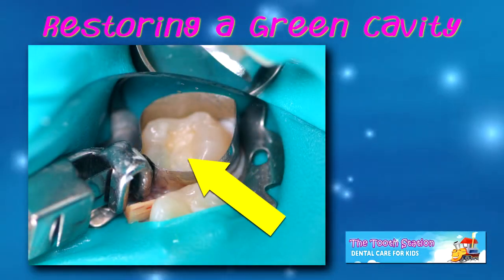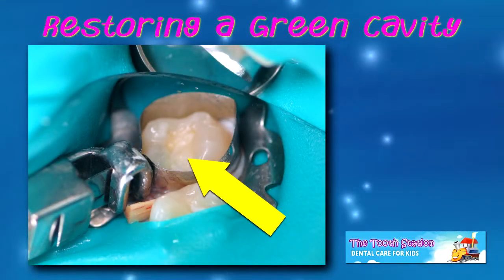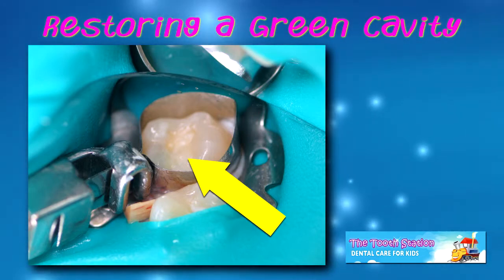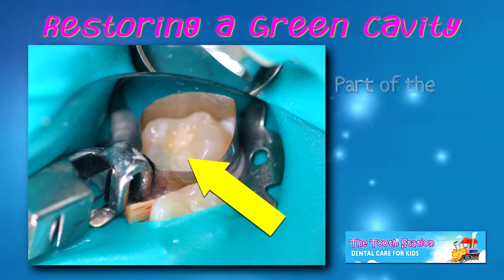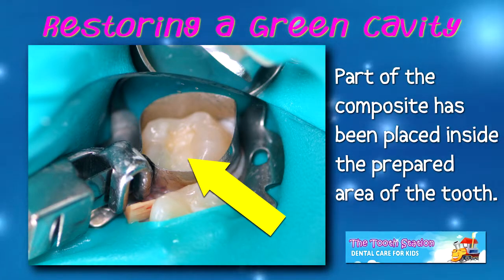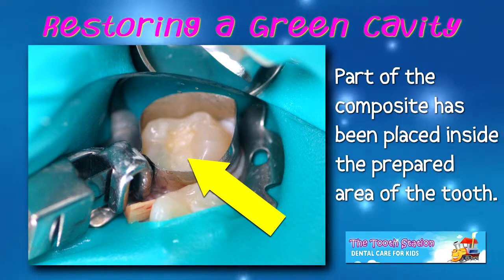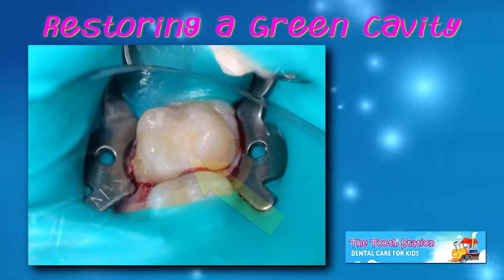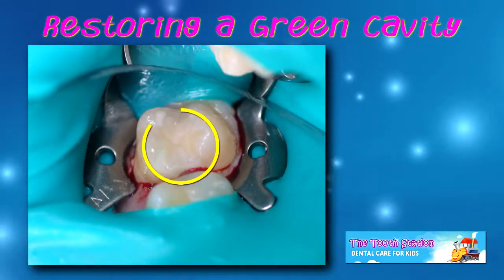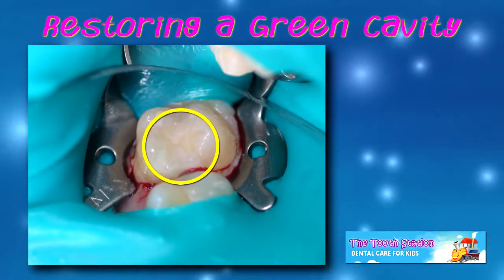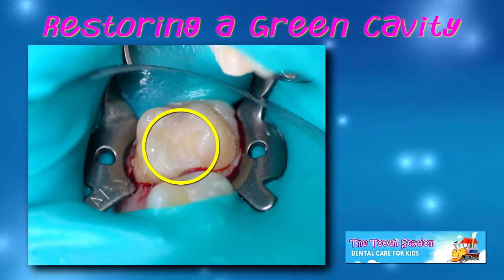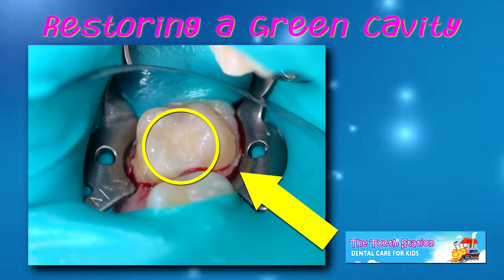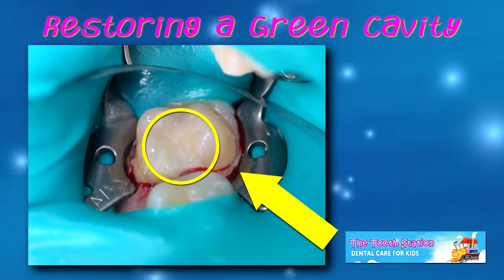This tooth is being filled or restored with a tooth-colored material called composite. In this photo, part of the composite has been placed inside the prepared area of the tooth. This photo is when all of the filling material has been placed in and on the tooth and the silver band or matrix has been removed.